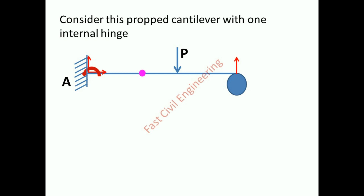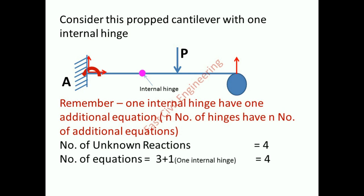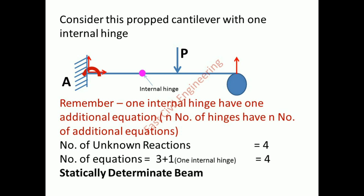Consider this prop cantilever with one internal hinge. Remember: one internal hinge provides one additional equation, and n number of hinges provide n number of additional equations. Number of unknown reactions equals four, indicated in red color. Number of equations equals three plus one equals four — statically determinate beam.